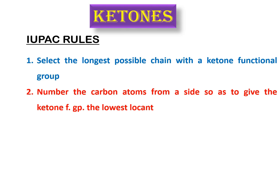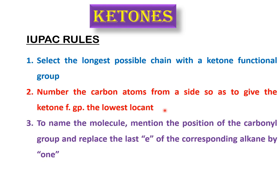Then you have to give numbers to the carbon atoms in that longest chain with the ketone functional group. You number the carbon atoms in that chain according to the position of the ketone, keeping in mind that you give the lowest possible locant or position to the ketone functional group.